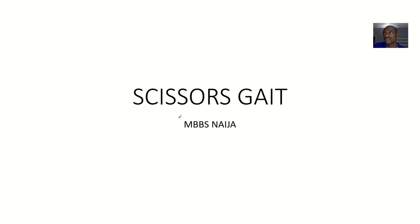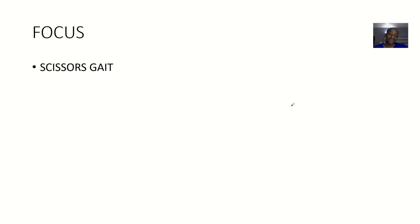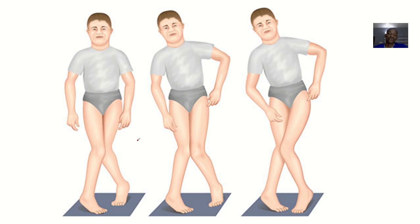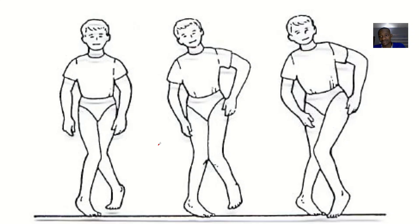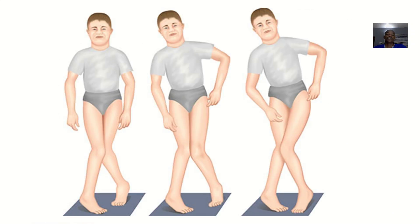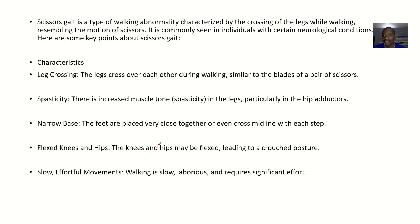We're talking about gates, and the next one is the scissors gate. The scissors gate got its name from how the legs intertwine — the legs are almost crossing each other like scissors. So if you ever see someone walking like this, they actually have a scissors gate.